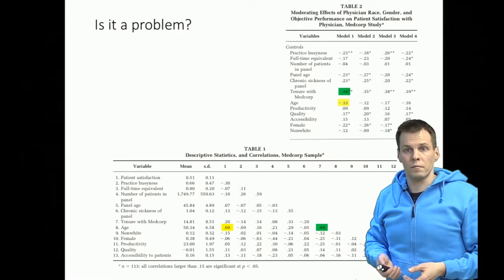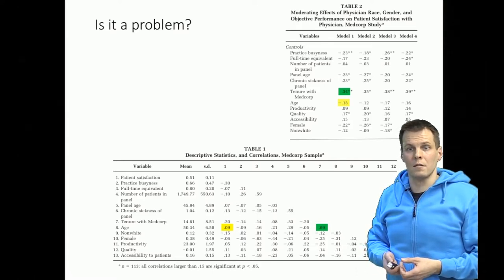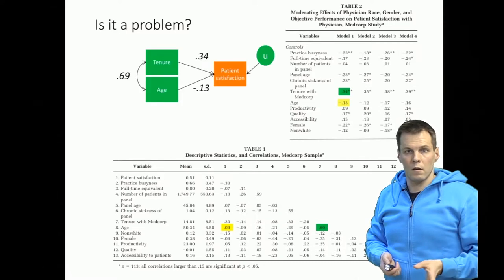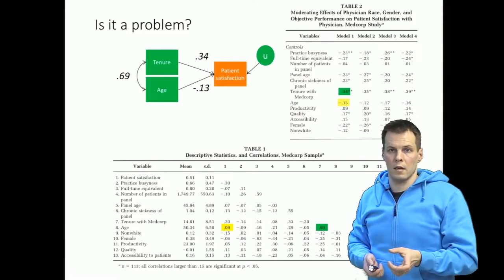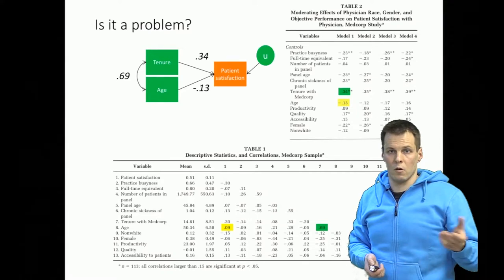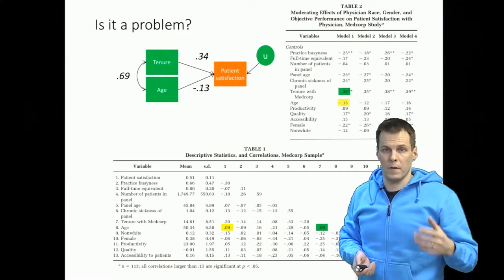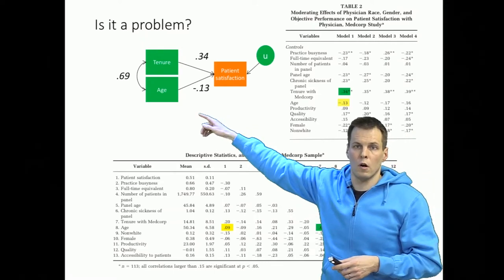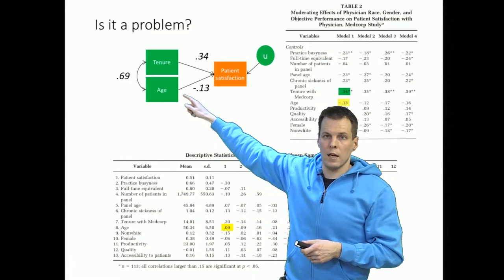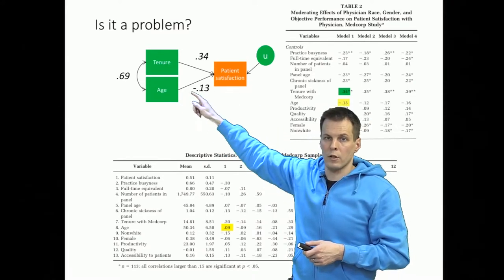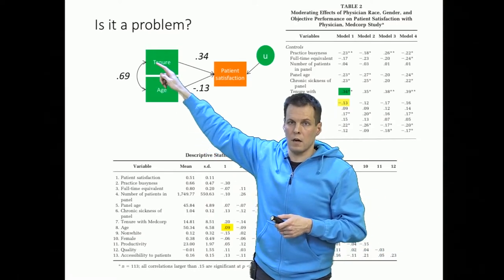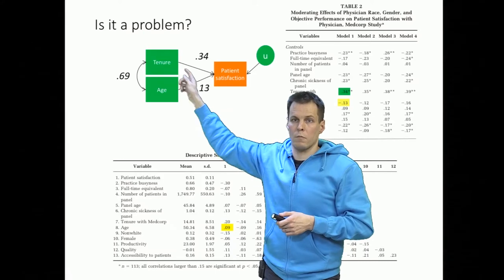So what's going on? Remember that the linear model implies a correlation matrix. So what is the implied correlation between our age and patient satisfaction based on the correlation between tenure and the effects of tenure and age? So we go from age to patient satisfaction.